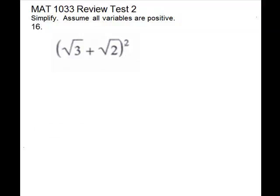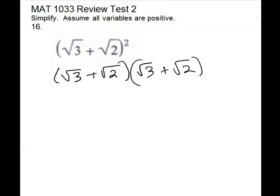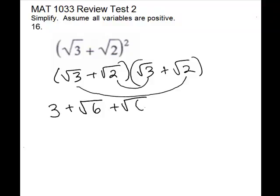For problem 16, we have a binomial squared. I would write it twice and do a FOIL. So I have square root of 3 plus square root of 2, times square root of 3 plus square root of 2. We'll do our first terms: square root of 3 times square root of 3 will just take the radical off, leaving you a 3. Then outside: square root of 3 times square root of 2 — multiply underneath the radicals, and there's nothing to simplify, so it gives you square root of 6. Inside: square root of 2 times square root of 3 will also give you square root of 6. And last: square root of 2 times square root of 2 will remove the radical and leave you just a 2.